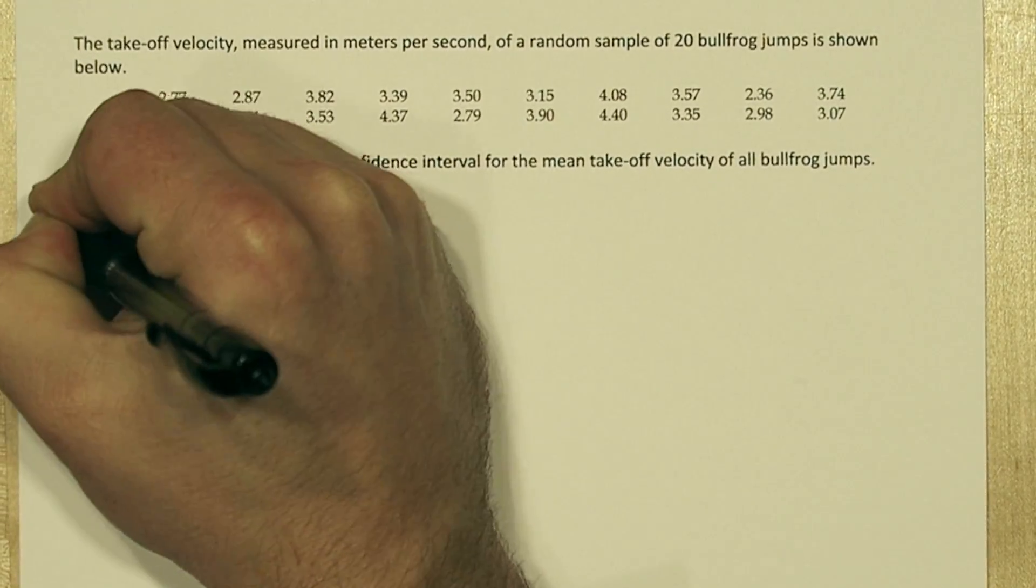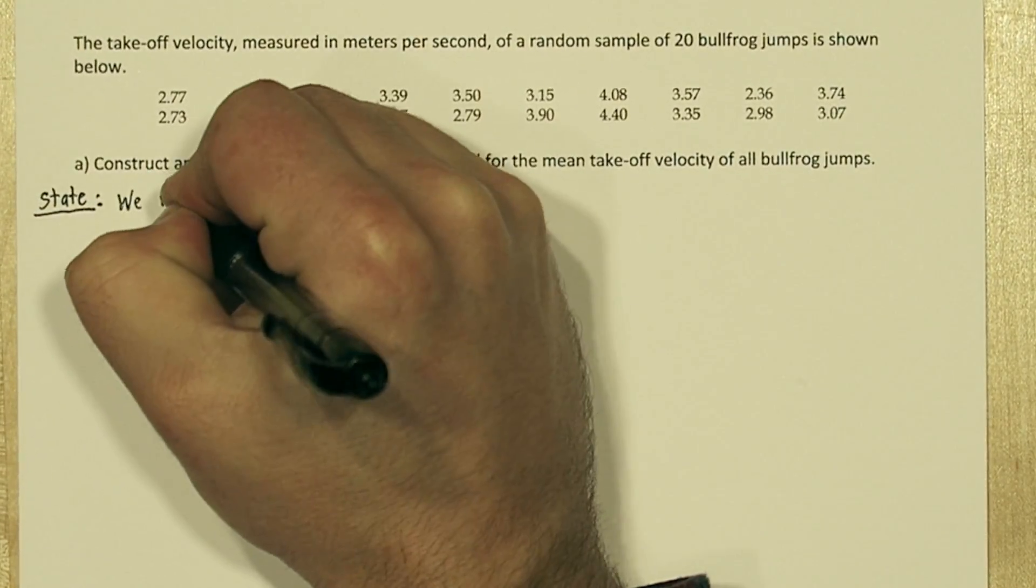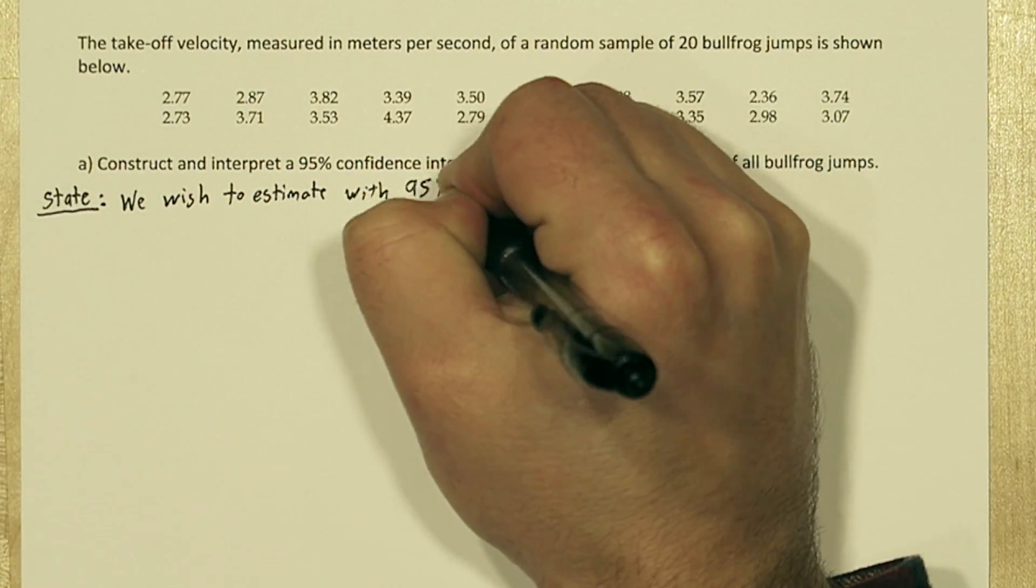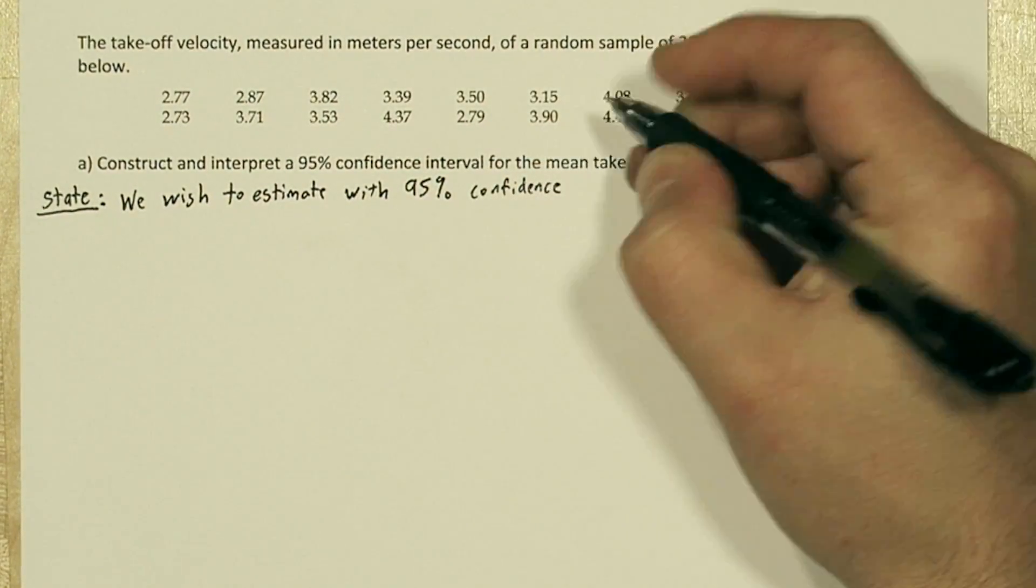In this problem we're trying to estimate a population mean, and we don't know the population standard deviation, so we need to use t procedures if possible. Let's use the four step solving process.